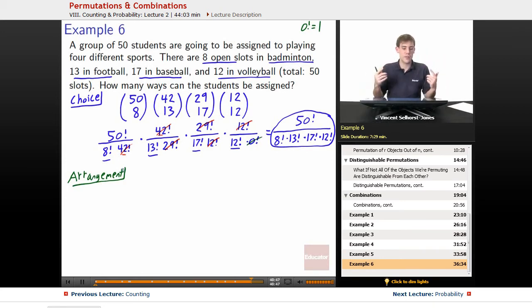So the way we have to think about this first, is we can think about this as putting all 50 students in a line. So we line them up alphabetically, whatever. We line up the 50 students, and then we keep them there. We don't let them move, they just stay in their position. So we have lined up students there. Next, we think of badminton, football, baseball, volleyball as cards.